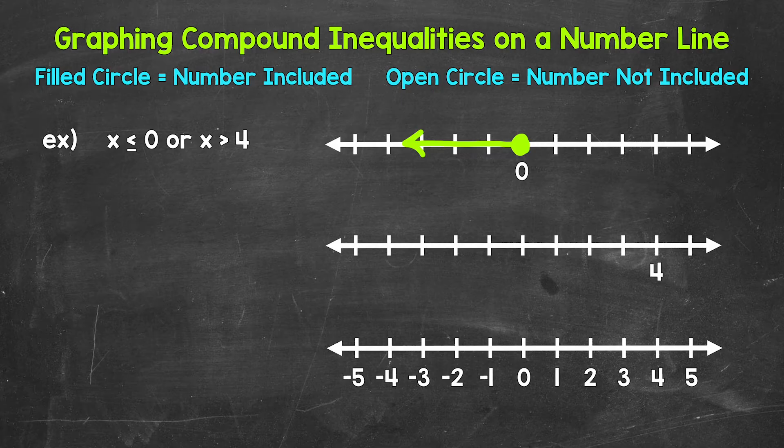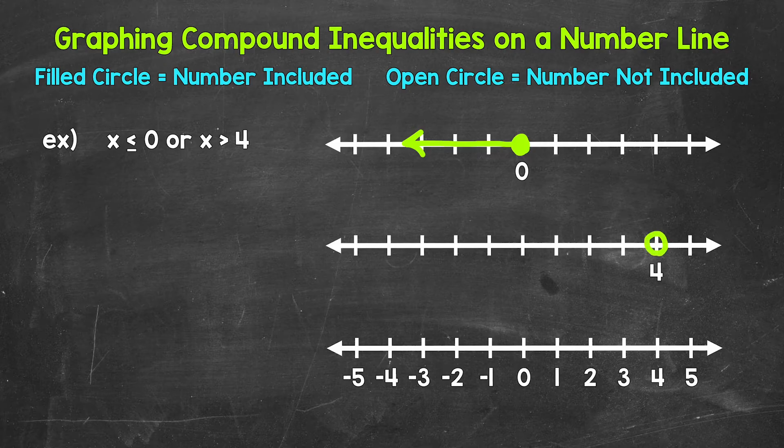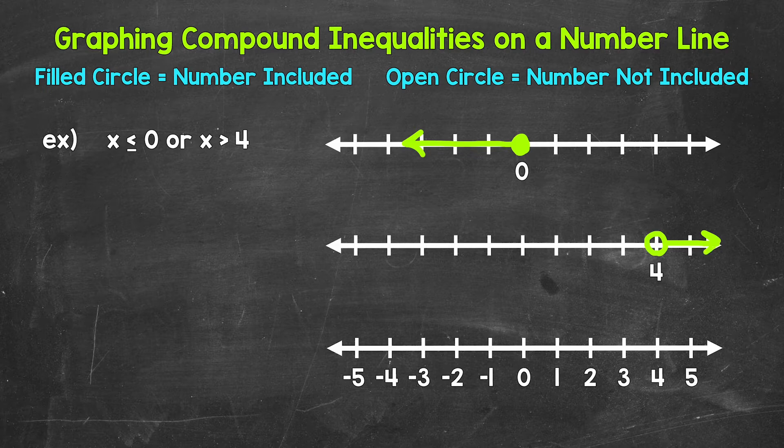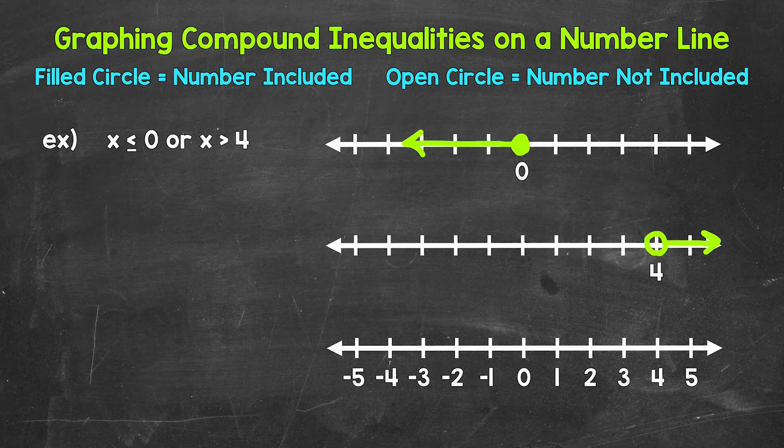Next, we have x is greater than 4. So we need an open circle at 4, 4 is not included. And then we need an arrow going right representing everything greater than 4. And that's x is greater than 4. Anything greater than 4 is a solution.